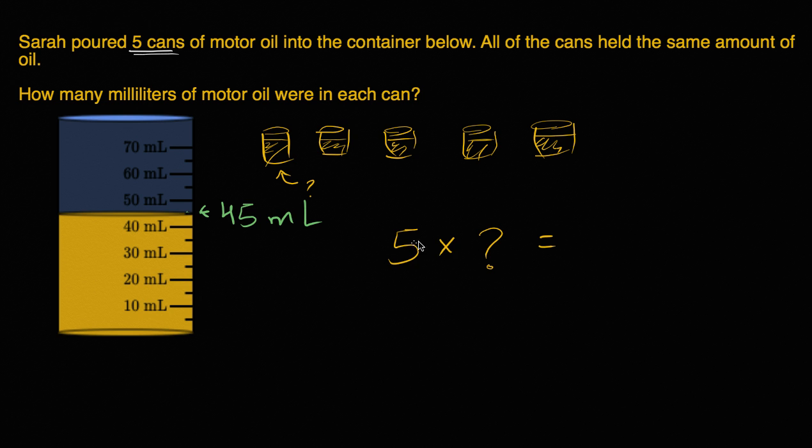And when you multiplied by five, when you put all five together, you got 45 milliliters. So five times what amount of oil per can would get us to 45 in total?